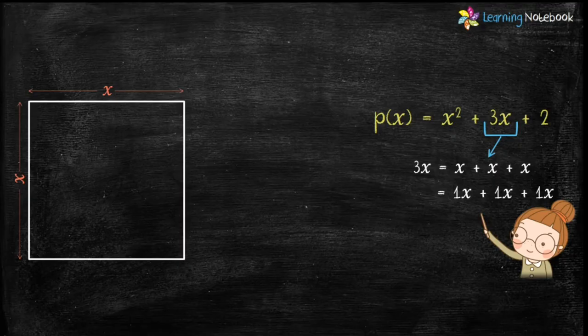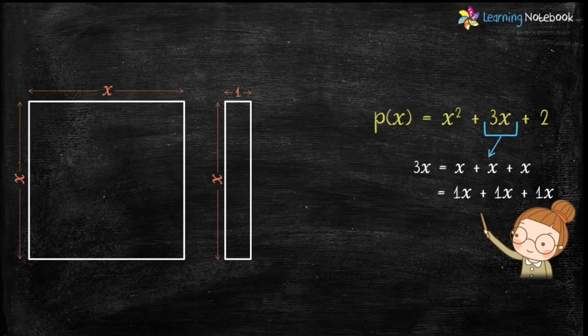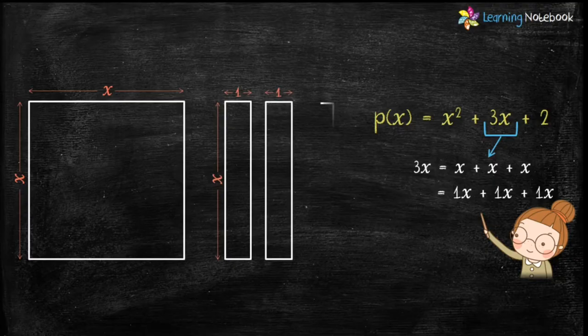Therefore 3x is the sum of area of 3 rectangles with area 1 times x each. So students, let's draw 3 rectangles of sides 1 and x.